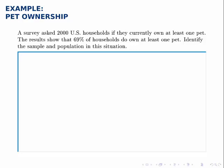So in this case, we're interested in knowing about all U.S. households, so that's the population. Notice that that wasn't explicitly stated, but it's clear from the problem statement that that's what we're interested in knowing about.